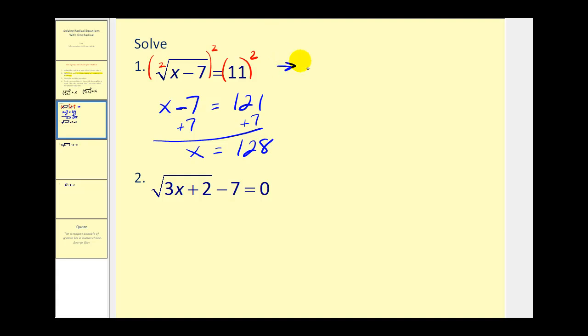We can go ahead and check this. Does the square root of 128 minus seven, that's 121, equal 11? And it does so it checks.